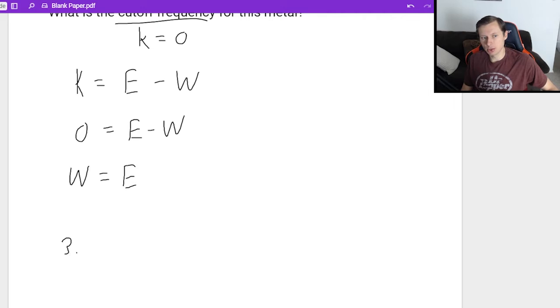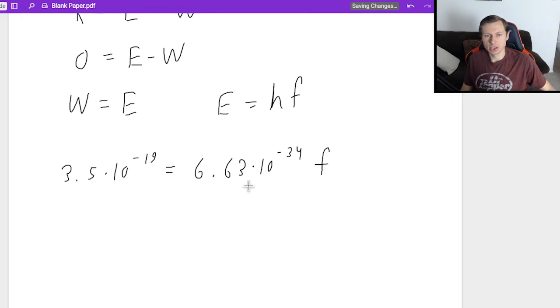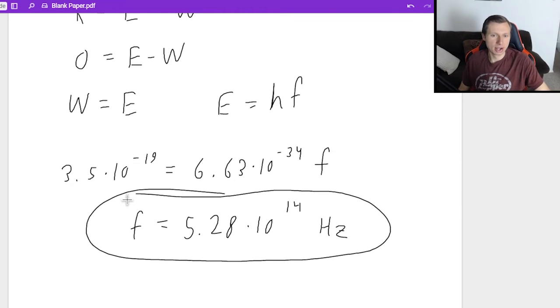So the work function we said was 3.5 times 10 to the minus 19th equals e, which I know e is equal to h times f, where h is 6.63 times 10 to the minus 34th times the frequency. This isn't so bad. Just divide both sides by 6.63 times 10 to the minus 34th, and we will get a frequency of 5.28 times 10 to the 14th hertz. And there we go. That's it. Are there harder problems with the photoelectric effect? I mean, a little harder, but that's basically it.